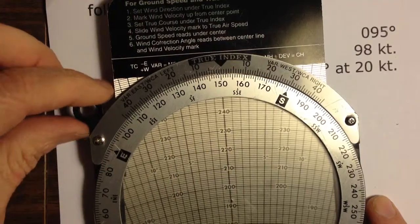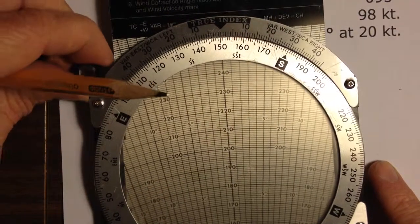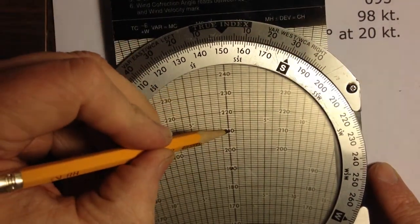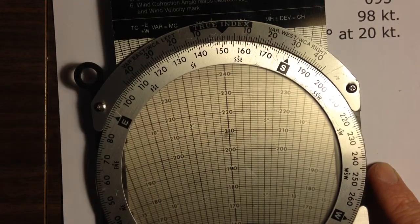Then I mark the wind speed up from the center point. The center point is right here, and I'm going to line that up so I've got a nice marking, and I'm going to go up 10, 20, and put a little pencil mark to indicate 20 knots.